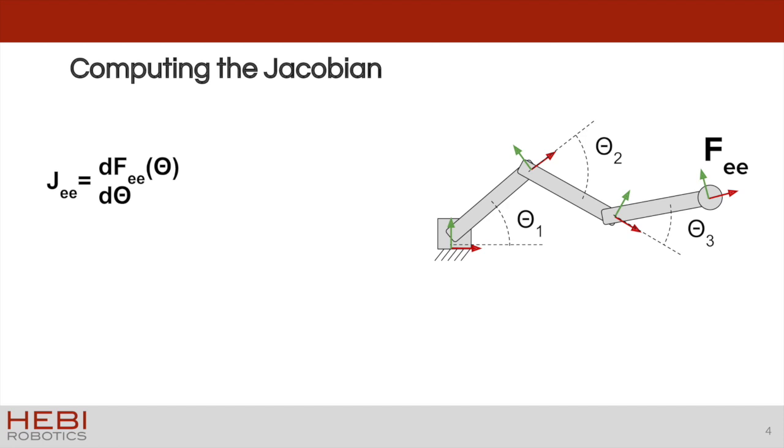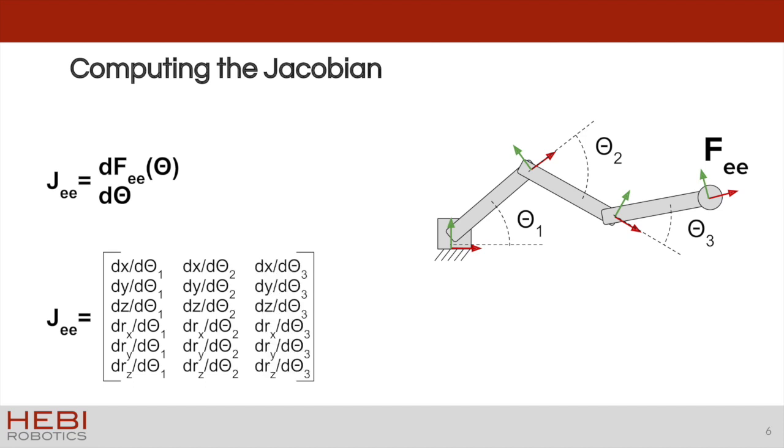We take the derivative of each of these with respect to each value in the theta vector. So the first set of derivatives would be dx/dθ1, dy/dθ1, dz/dθ1, etc. So this results in six rows. We now continue with the other robot joint angles and get a result of a 6 by n matrix, where n is the number of joint angles in your system. This is the Jacobian matrix.